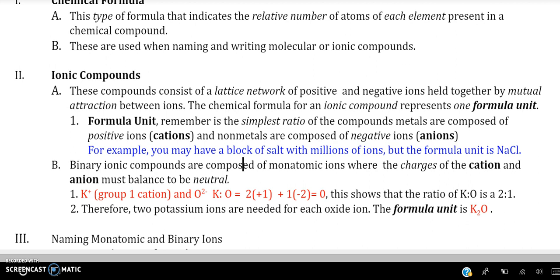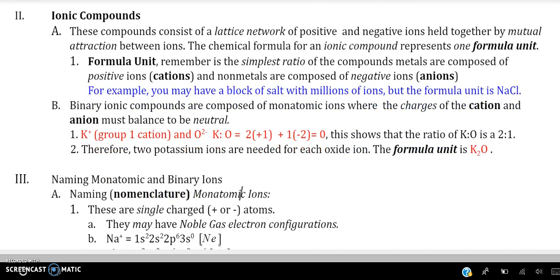Binary ionic compounds are composed of monatomic ions which have charges of cations and anions to become neutral and charge overall to make the compound. For example, potassium is a group 1 cation and oxygen is from group 16, which has a negative 2 oxidation state. It will require a ratio of two potassium atoms to every one oxygen atom to make the formula unit of potassium 2 oxide, or common name potassium oxide.